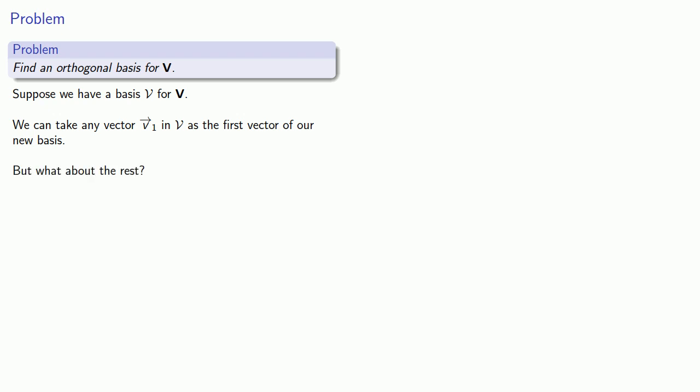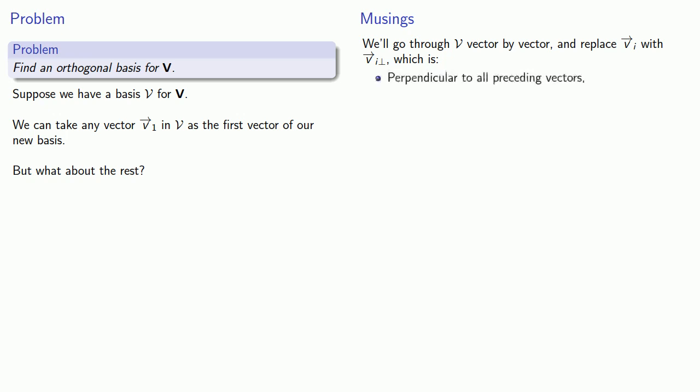The solution we might come to is the following. We'll go through our set v, vector by vector, and replace any vector vi with vi perpendicular, which is perpendicular — orthogonal — to all of the preceding vectors, but still part of a basis for our vector space.